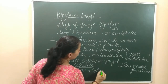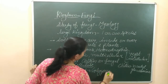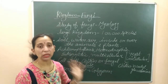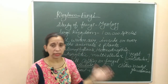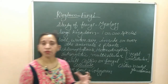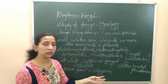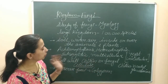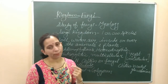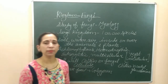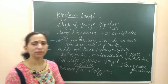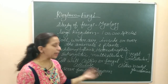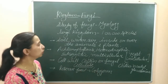The reserve food found in fungi is glycogen. They store their food in the form of glycogen. That is a similarity with the animal kingdom — animals also store their food in the form of glycogen. Similarly, fungi store food as glycogen, but the presence of a cell wall is a similarity with the Plantae kingdom.